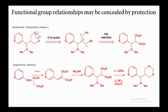Sometimes the functional group relationship is concealed by protection. In this example, the acetal protecting group conceals the ester linkage. Disconnect the C–O acetal linkage to generate 1,2,3-triol functionality. Do FGI reduction to convert alcohols to esters, then disconnect at the alpha position to reach simple starting materials. In the forward synthesis: react with the Michael acceptor in the presence of base, then reduce esters to alcohols, and protect those alcohols as acetals using formaldehyde.